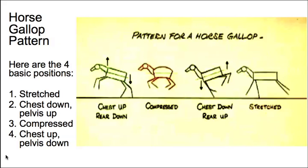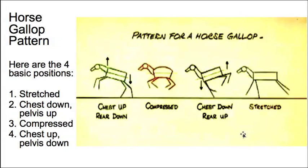The basic horse gallop pattern, taken from the Animator's Survival Kit, consists of four positions: chest up and rear down, a compressed position, then chest down and rear up, and then a stretched position. Those are the four basic poses for a horse gallop.